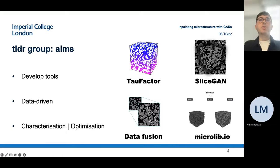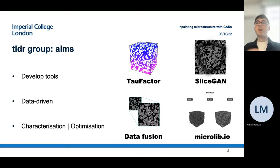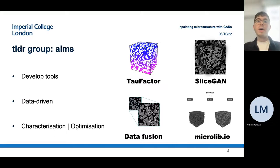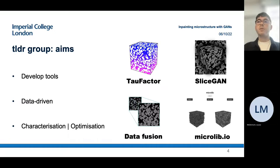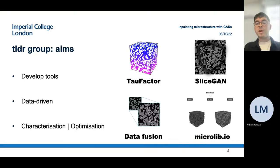A recently accepted paper is a project called Data Fusion, where we used generative adversarial networks to combine different data types into a single unified volume. This is driven by the idea that different imaging techniques capture different information at different resolutions, imaging different phases, and we've developed this machine learning technique to combine them into a single unified view of a material.